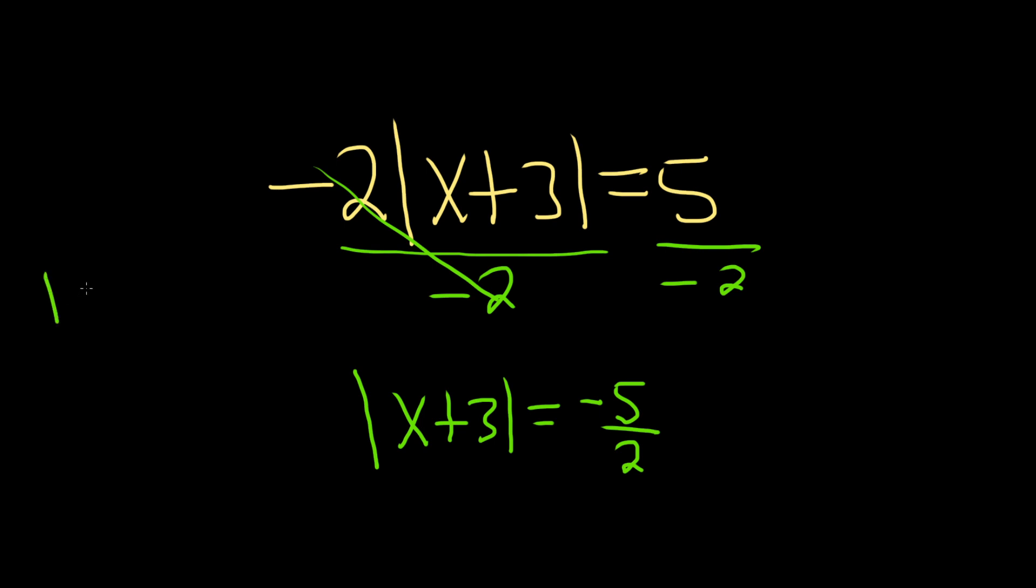Normally, the rule is if you have the absolute value of x and it's equal to a, then x is equal to plus or minus a. So x is a or x is negative a. You drop the absolute value and put a plus or minus.